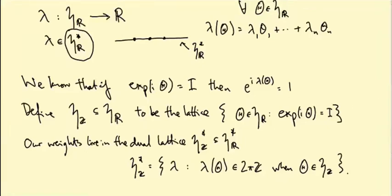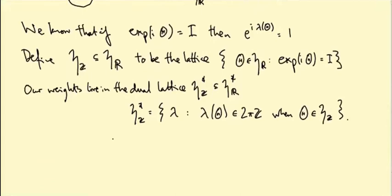This is just rephrasing what I said - that we know if X^{i*theta} is the identity, then e^{i*lambda(theta)} is one. That's just telling us our weights can't just be any old elements of H_R^*; they have to live in a specific lattice, and this is called the weight lattice because that's where the weights live.